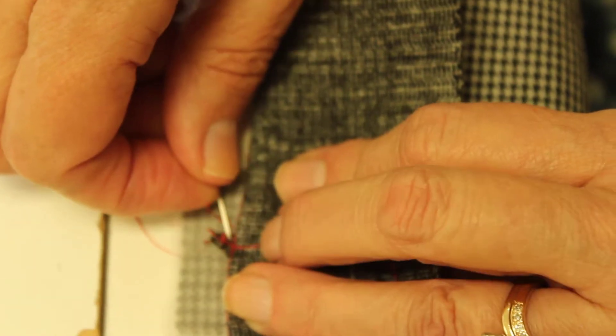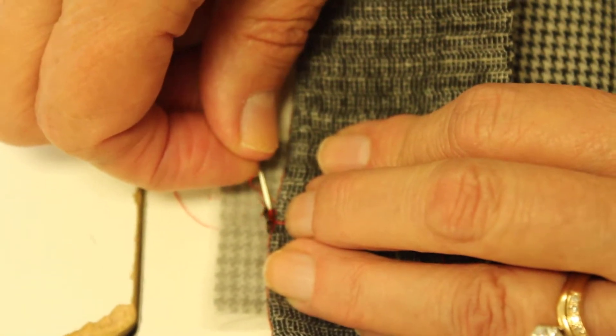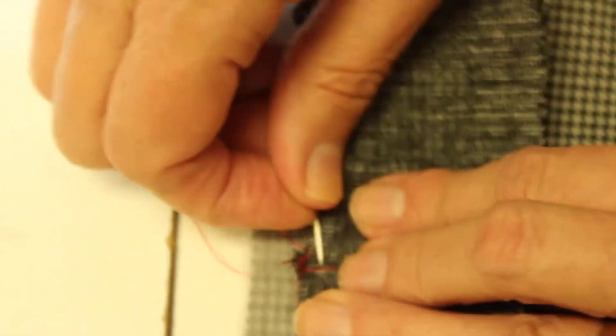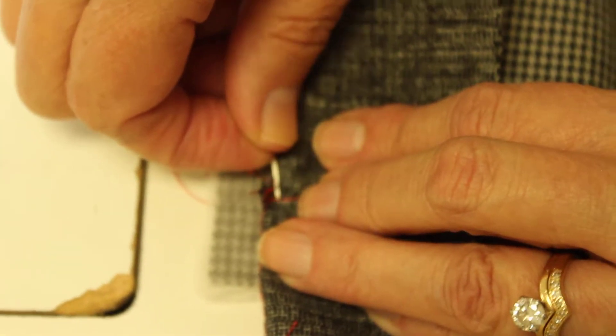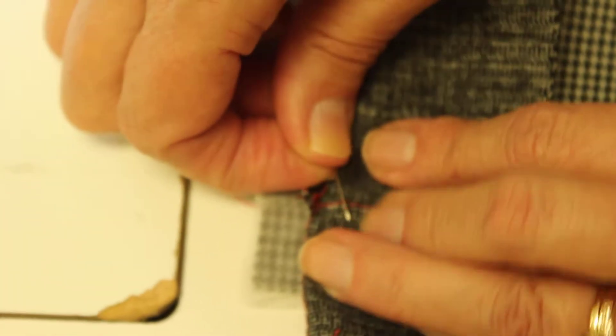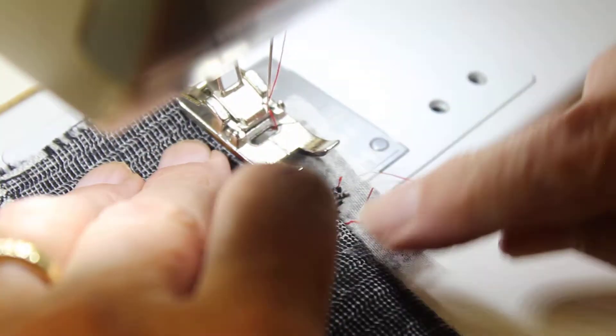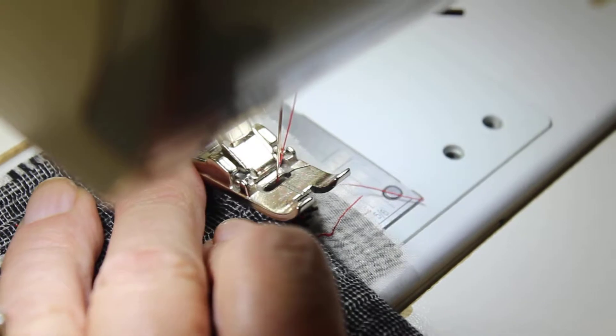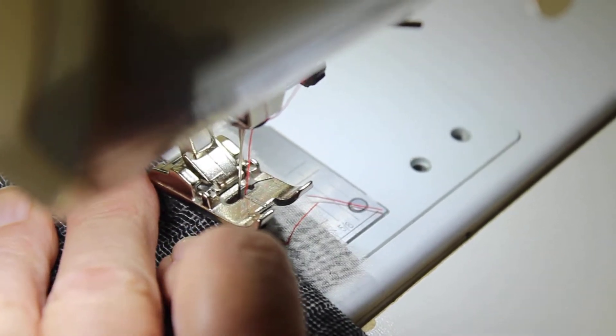I've got some basting here I think I'm going to get rid of so that I don't stitch over that basting. So let's get rid of that. Okay, so let's go over here. And I'm going to start by putting my needle down right here. And I'm just a little bit beyond there.